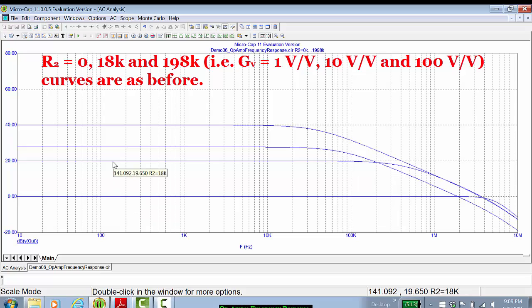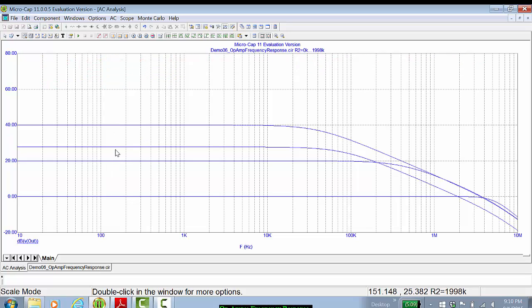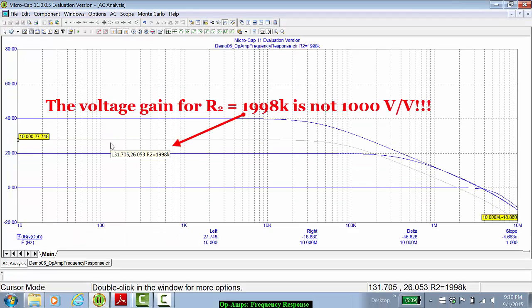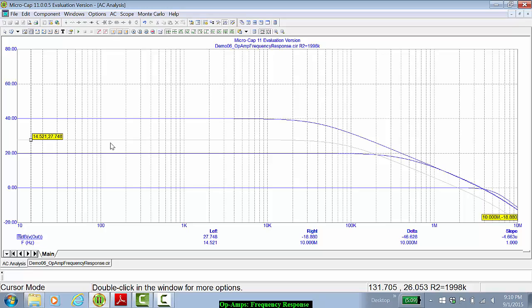You'll notice something a little odd. In this case, the R2 equals zero k (that is the unity gain buffer), the R2 equals 18k (that is a 10 volts per volt), and R2 equals 198k (that is 100 volts per volt) curves look as they should. But R2 equals 1998k is giving us a rather weird result. Instead of being at 60 dB, the gain is showing up as being 27.8 dB.